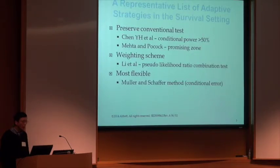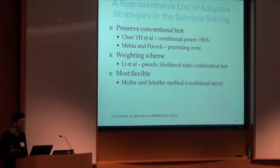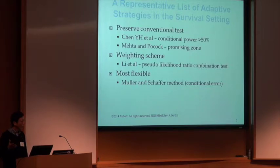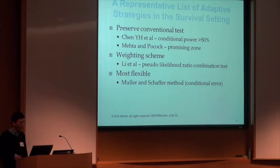To give a representative list of adaptive strategies in the survival setting, we start with the convenient methods. There is a method developed by Joshua Yung-Hua Chen. Basically, if the conditional power is greater than or equal to 50%, you can do whatever adaptation — increase the sample size, et cetera — but you still use the conventional test statistic, the original test statistic, without any modification. So that's very convenient.